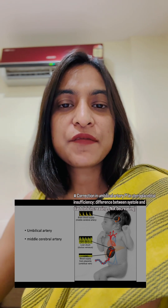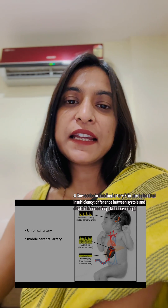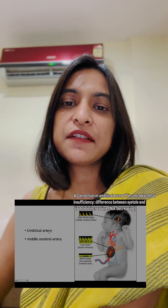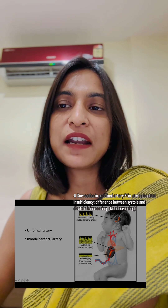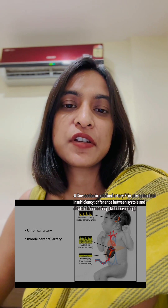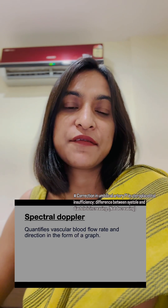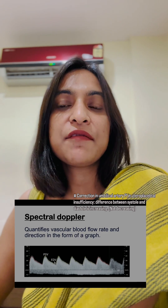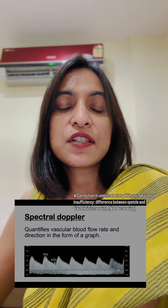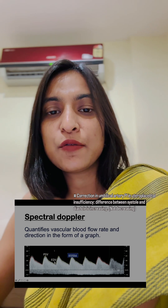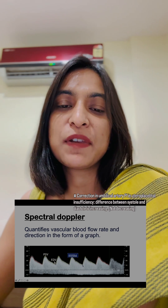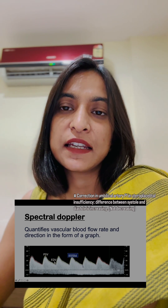Two of the important blood vessels of the fetal Doppler are the umbilical artery and the fetal cerebral artery. A Doppler quantifies vascular blood flow rate and direction in the form of a graph. The bigger peak denotes velocity in the systole and the lower part denotes blood flow in the diastole.